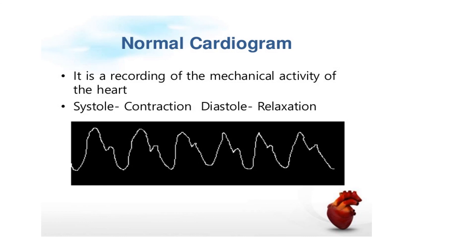The normal cardiogram is the recording of mechanical activity of the frog's heart. Systole is the contraction and diastole is the relaxation. Here you can see the two activities: one is the activity of the atrium and the other is the activity of the ventricle. Thank you.